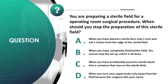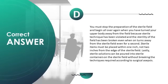You are preparing a sterile field for an operating room surgical procedure. When should you stop preparation? A) when a sterile item is placed only 1 inch from the edge, B) when completely finished, C) when you accidentally pour sterile liquid into a container on the sterile field, D) when you turn your upper body away from the field. Correct answer is D.